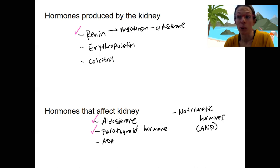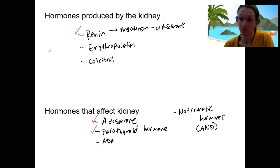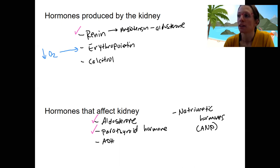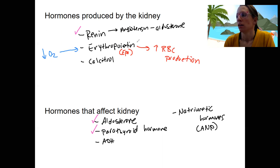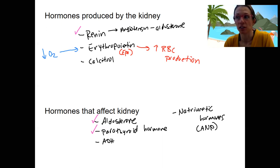What causes the release of erythropoietin? Low oxygen — and that makes sense, because erythropoietin is going to result in increased red blood cell production in the red bone marrow. About 85% of your EPO is produced in the kidneys. So the kidneys regulate red blood cell production through sensing oxygen levels.